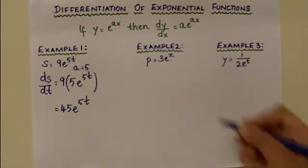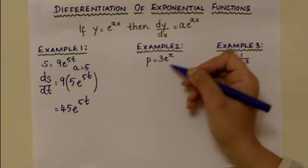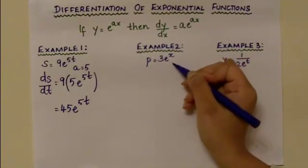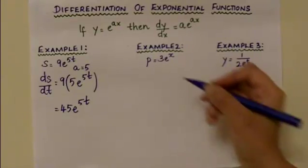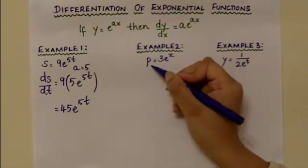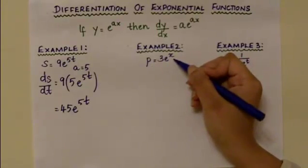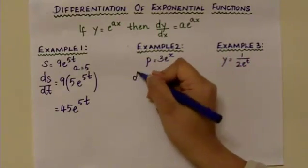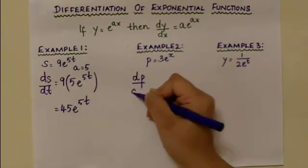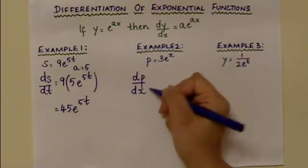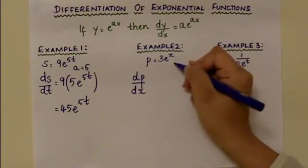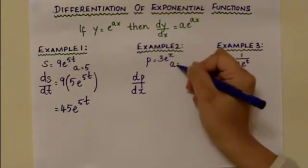Moving on to the next example: p is equal to 3e to the power of x. We are differentiating equation p with respect to the variable x, so the differential coefficient becomes dp over dx. The coefficient of the variable x is a equal to 1.